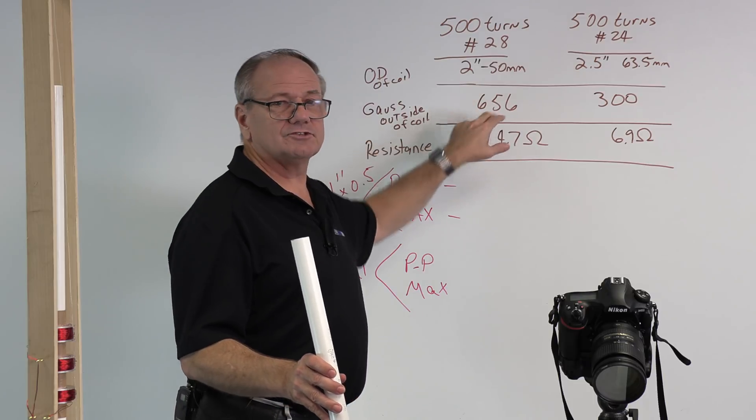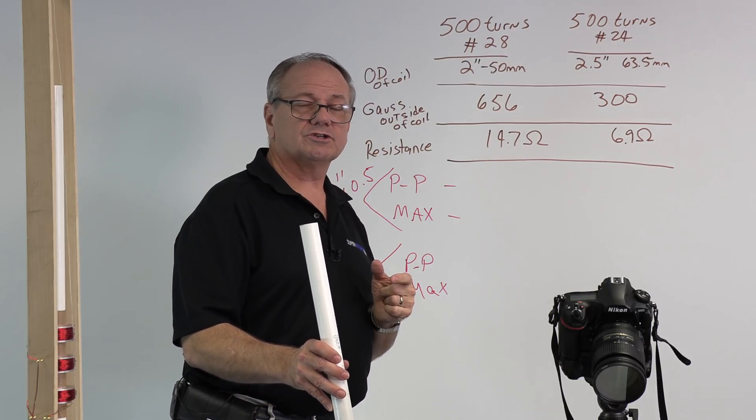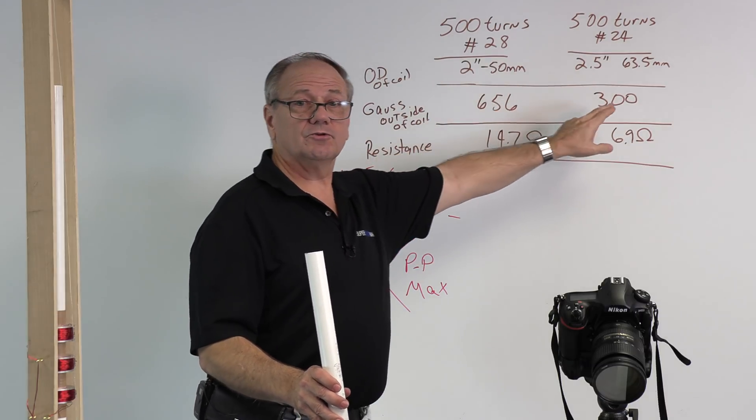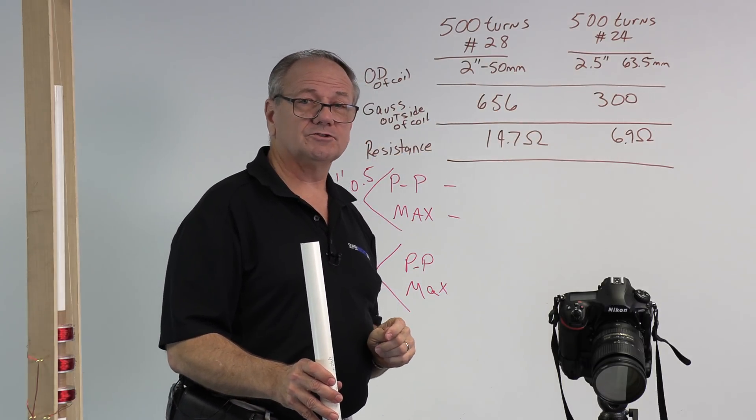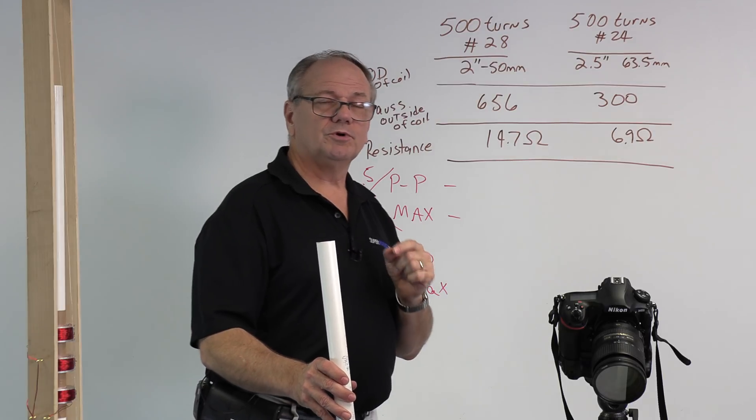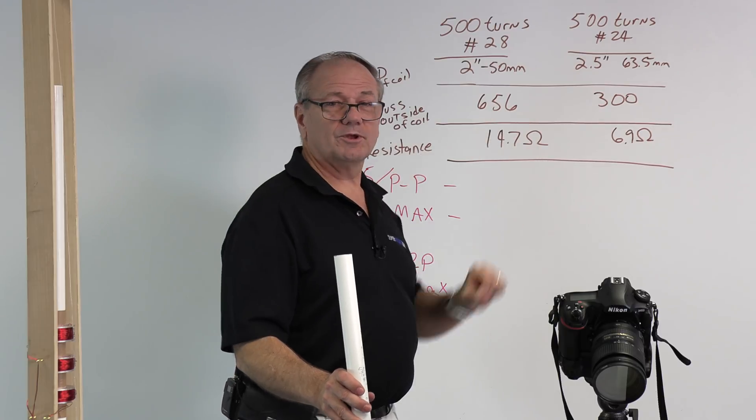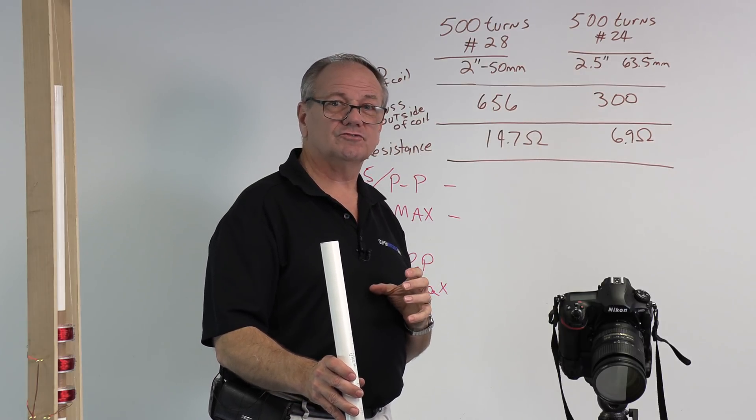Because the 28 gauge is smaller and closer to the surface, the gauss reading on the outside of it with the big magnet, the one inch diameter, one inch thick with a quarter inch hole in it, is 656. The other one, the 24 gauge, because it's a bigger coil, puts the outside coil that much farther away from the magnet. It's down to 300 gauss in just that extra distance.